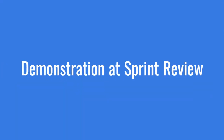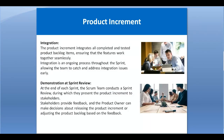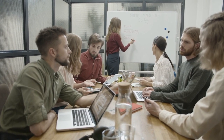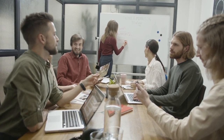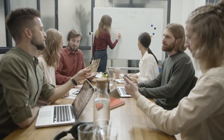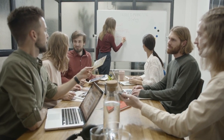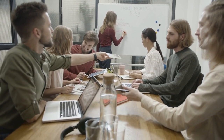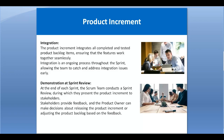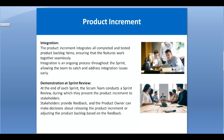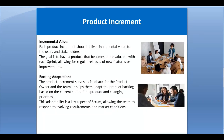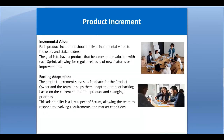Demonstration — at a sprint review, once the sprint ends, the Scrum team conducts a sprint review meeting in which they show the product increment and working functionality to the stakeholders. Stakeholders provide feedback, and the product owner can take decisions about releasing the product increment or adjusting the product backlog based on that feedback. The product owner can decide to release it to end users or reject it.